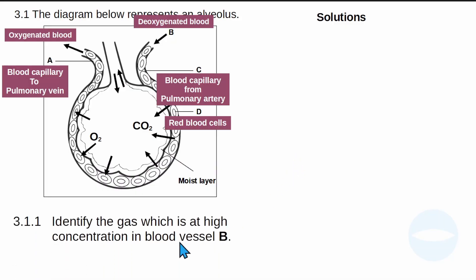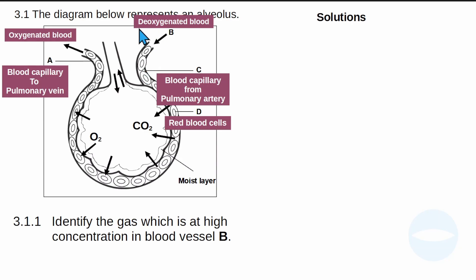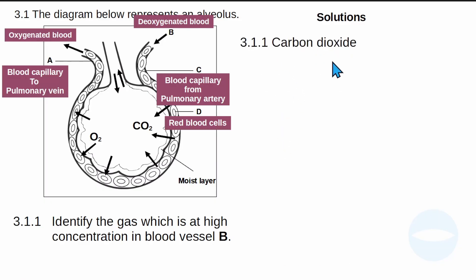Question 3.1.1: Identify the gas which is at high concentration in blood vessel B. Blood vessel B shows blood entering — this is deoxygenated blood, so it is higher in carbon dioxide. The answer is: carbon dioxide is at a very high concentration in vessel B.